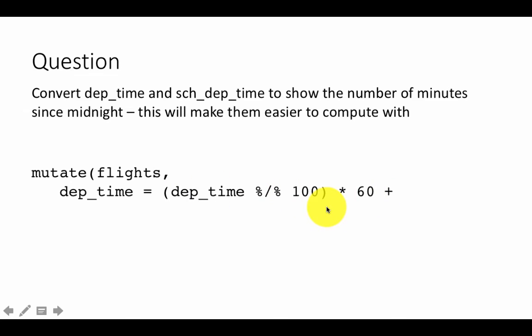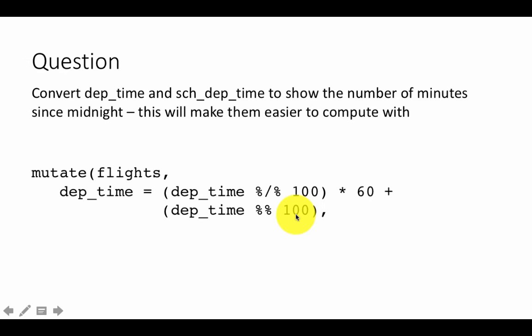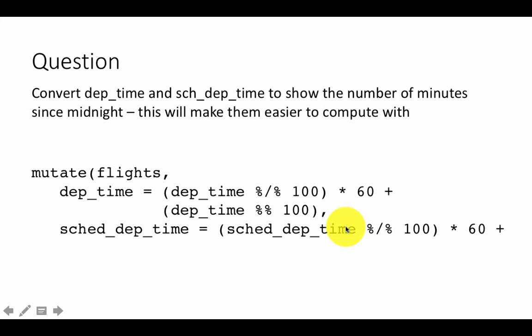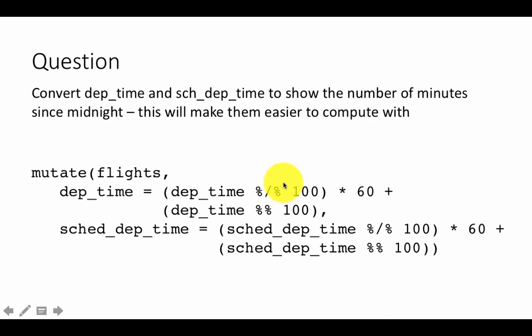Since we are changing values in existing columns, we use mutate(flights, dep_time = (dep_time %/% 100) * 60 + (dep_time %% 100), sched_dep_time = (sched_dep_time %/% 100) * 60 + (sched_dep_time %% 100)). For example, if the time was 530: integer division by 100 gives 5 hours, times 60 gives 300; the remainder from dividing by 100 gives 30 minutes; total is 330 minutes since midnight. Notice the difference: percent-slash-percent is integer division, percent-percent is the modulus operator for the remainder.